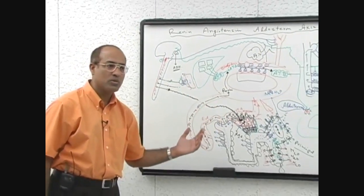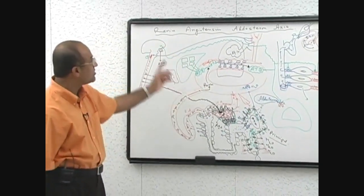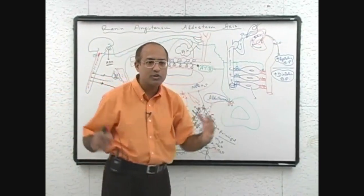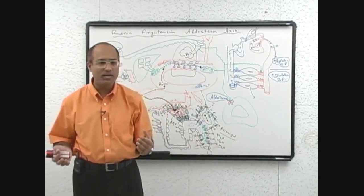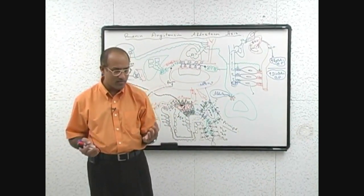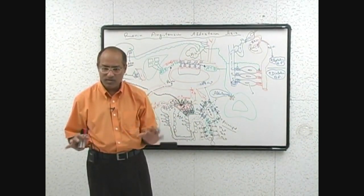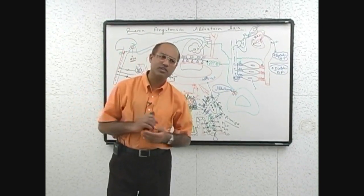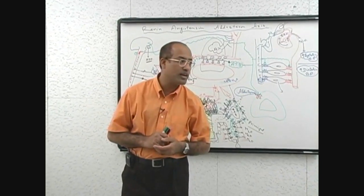Again that is helpful. By all these means, what angiotensin-2, I must say, by all these means, the renin-angiotensin-aldosterone axis is doing, it is trying to elevate the blood volume and blood pressure. This is the physiological functions of angiotensin-2 and aldosterone.